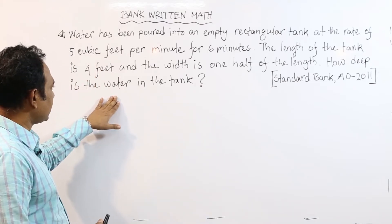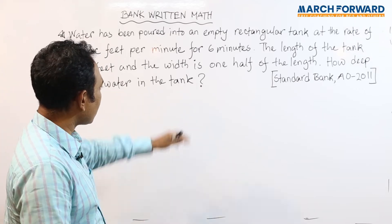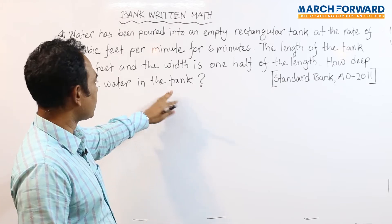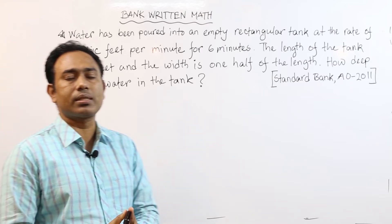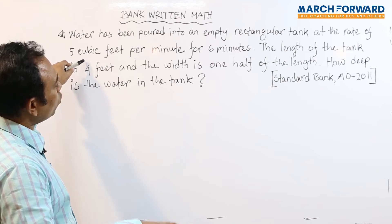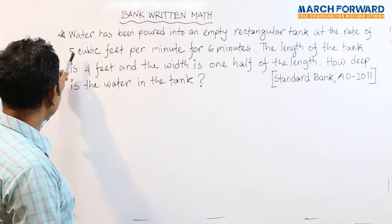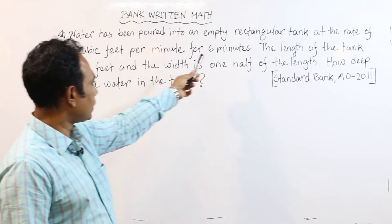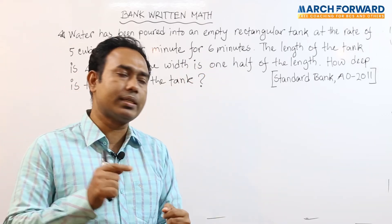The question is: how deep is the water in the tank? To solve this, we start with 5 cubic feet per minute for 6 minutes, so we multiply 6 into 5.